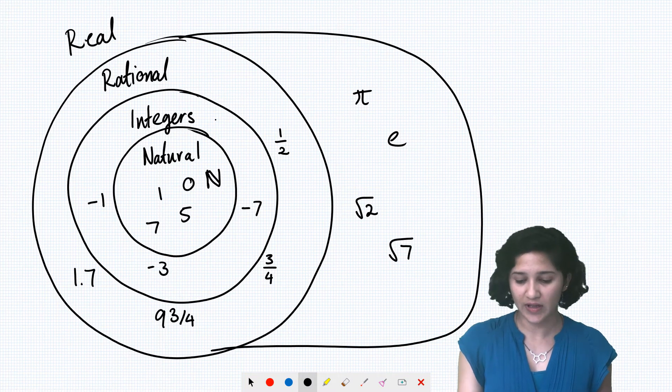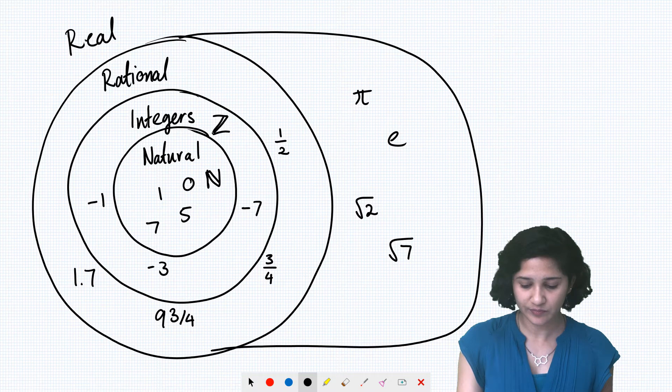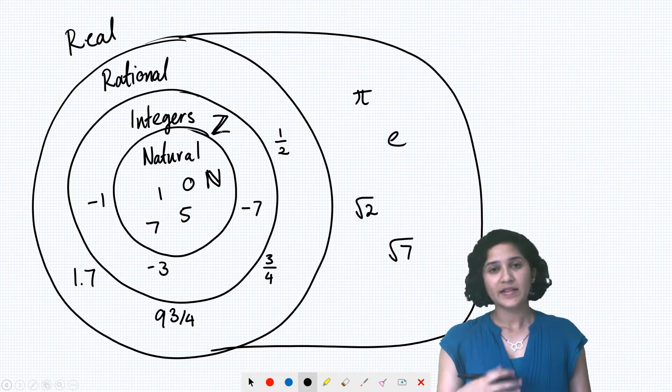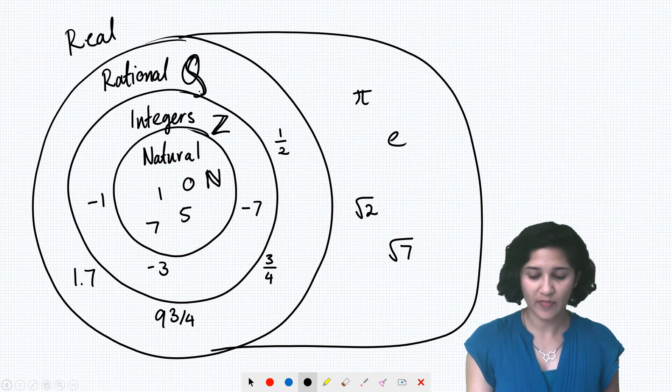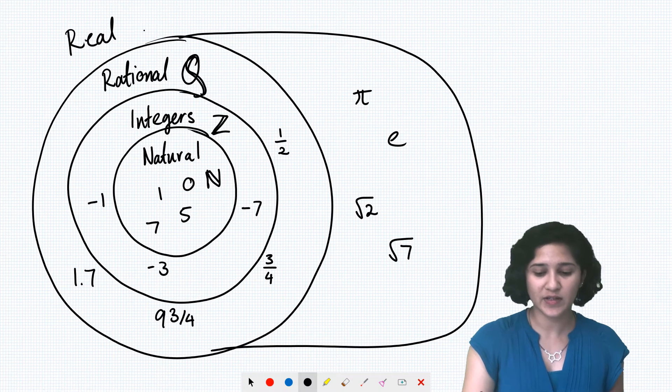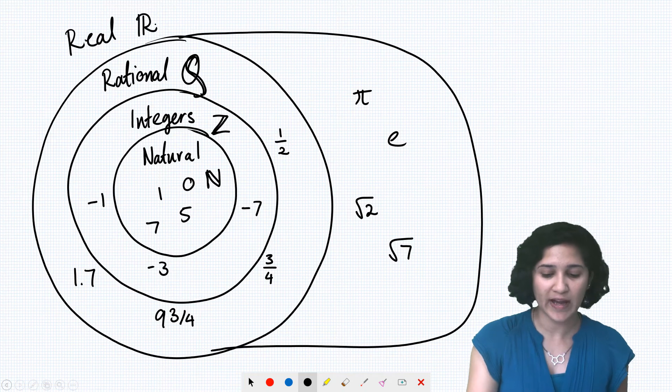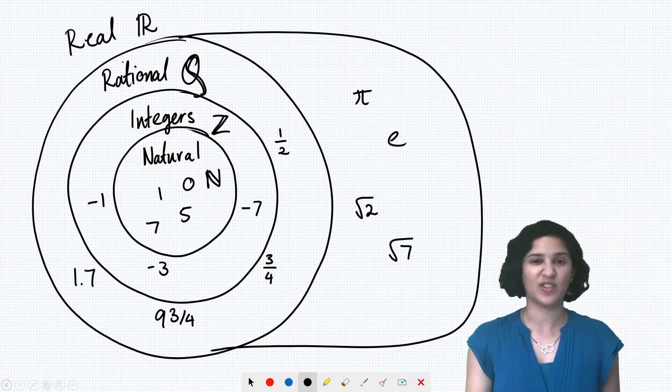Integers is a little more confusing. That one is Z. Then we've got rational numbers, which are Q, and real numbers, which is R. So because we had R for real, we couldn't use R for rational.